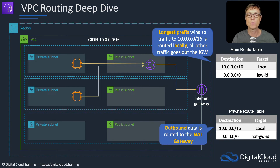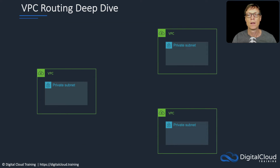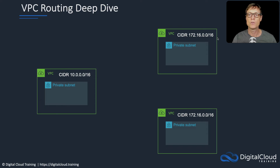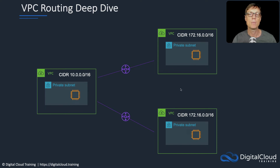With this configuration, we have outbound data going out via a NAT gateway for our private instances. Now let's look at what happens when we have multiple VPCs and we want to configure routing. In this case, we have a CIDR block assigned to each of these VPCs. You'll notice that two of these VPCs have the same CIDR block, meaning they have overlapping CIDR blocks. We can create VPC peering connections between VPCs, but not between those two because overlapping CIDR blocks are not allowed with VPC peering.